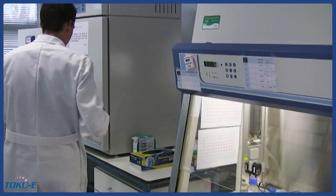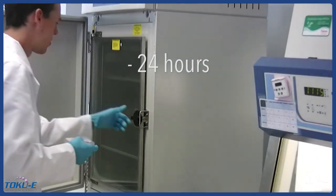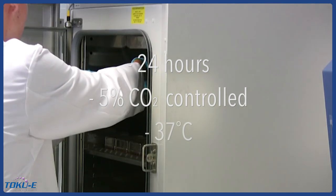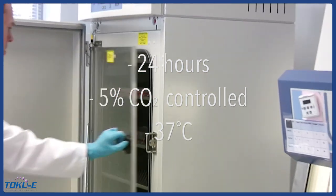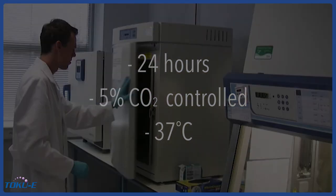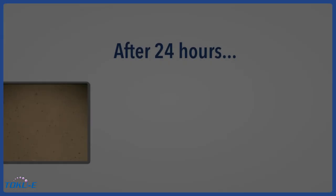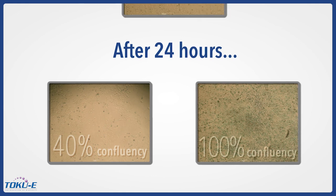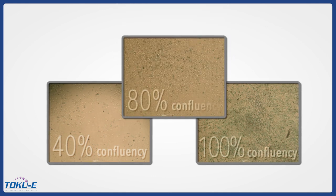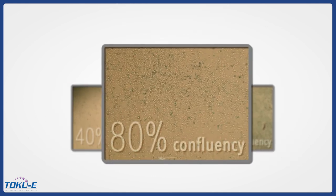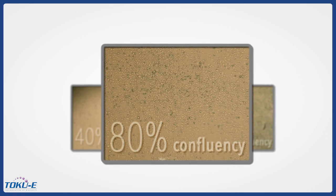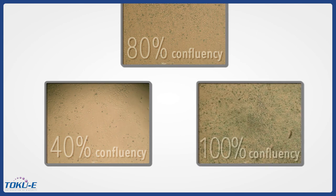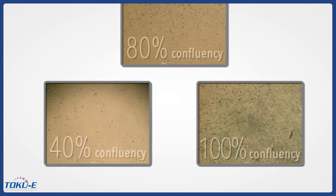Place the 24-well plate for 24 hours in a 5% CO2-controlled incubator at 37 degrees Celsius. After 24 hours of incubation, inspect the cells using a microscope to see which wells have 80% confluency. The wells with 80% confluency are optimal for maximum transfection efficiency. If the cell density is too low or too high, transfection efficiency and success will be much lower.